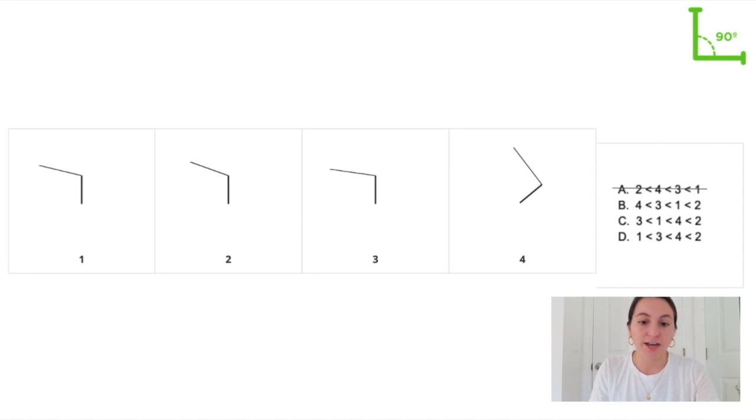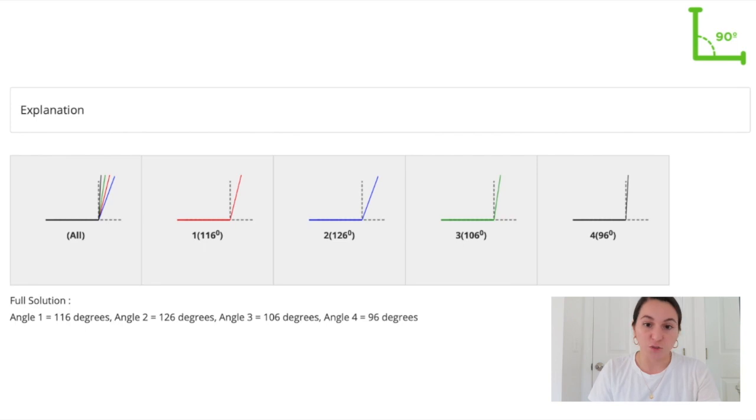If I turn my head a little it looks like angle 4 is the closest to 90 degrees and therefore the smallest angle here. So the correct answer choice must be B. Here is the explanation for that example. You can see that angle 4 was the smallest and angle 2 was the largest.